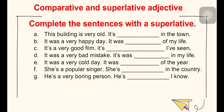Complete sentences B to G. Letter B: 'It was a very happy day' — 'It was the happiest day of my life.' C: 'It's a very good film' — 'It's the best film I have seen.' D: 'It was a very bad mistake' — 'It was the worst mistake in my life.'